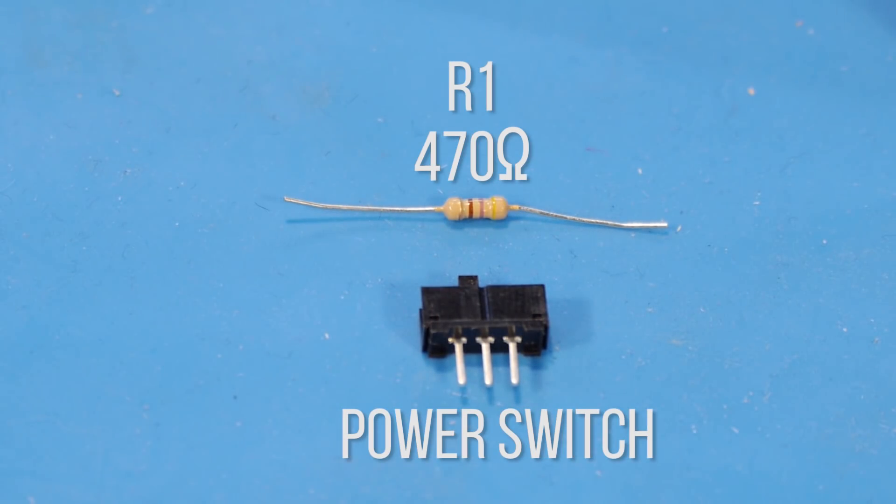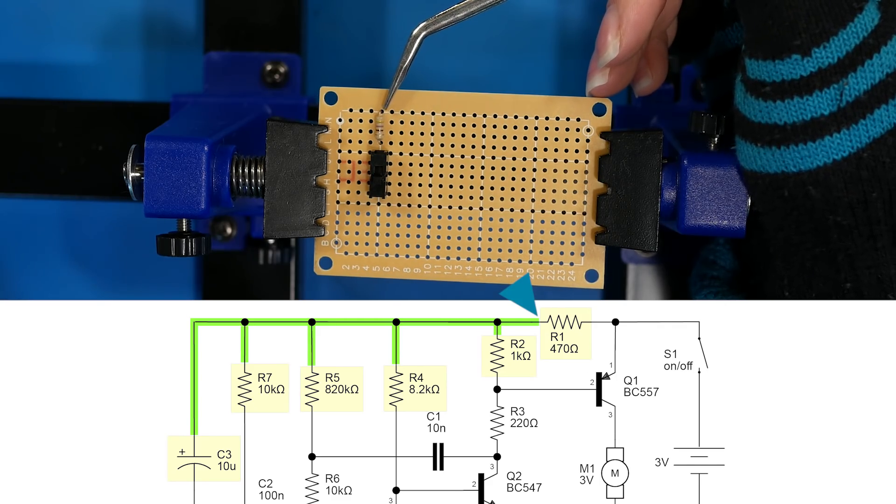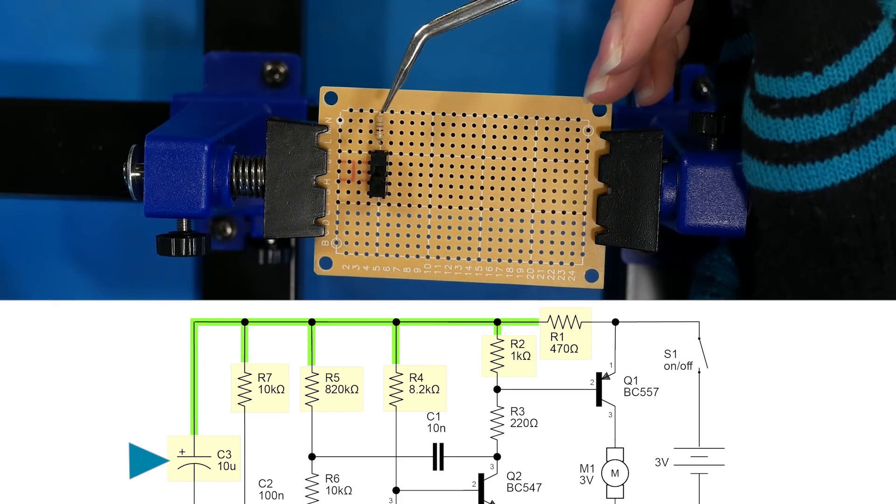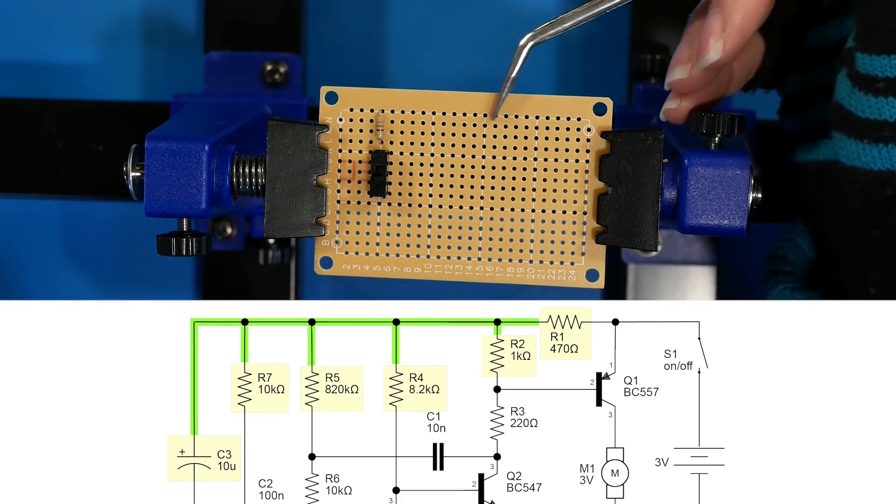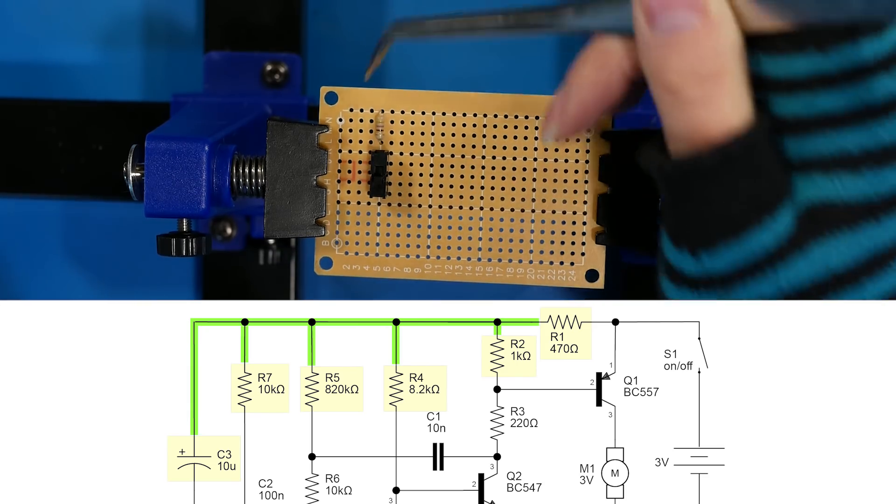Place the switch and R1, the 470 ohm resistor. So according to our schematic, on this end of this resistor is going to connect four more resistors and the 10 microfarad capacitor. Now to do that, we're going to create kind of a power plane along the top here. So I'm going to place all of my resistors so that they're connected there.